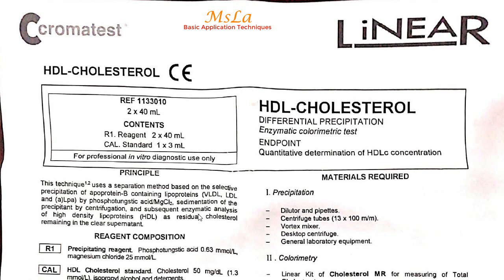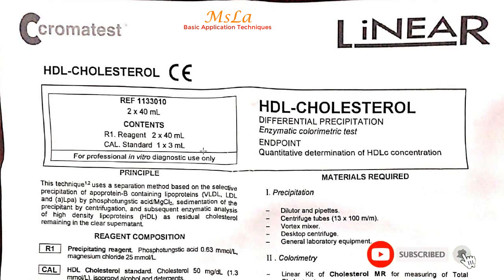The kit contains R1 reagent 2x40 ml in 2 bottles, and a standard 1x3 ml active standard vial. This is an HDL cholesterol differential precipitation enzymatic colorimetric test for quantitative determination of HDL cholesterol concentration. The precipitating reagent and HDL cholesterol standard concentration is 50 mg per deciliter.